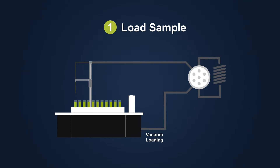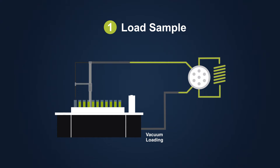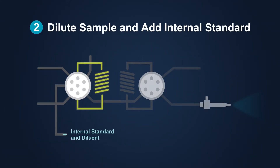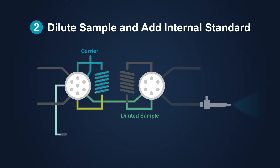During the analysis sequence, a precise volume of sample or standard is rapidly vacuum-loaded into a sample loop. Within seconds, the sample is automatically prepared by inline syringe addition of internal standard and diluent according to the dilution factor supplied from the ICP-MS software.